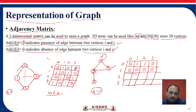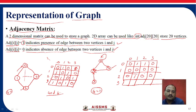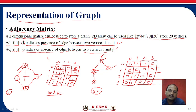Now for row 2: 2 to 0 — no; 2 to 1 — yes, there is an edge because a direction arrow is present; 2 to 2 — no self loop, so 0; 2 to 3 — no. For row 3: 3 to 0 — no connection; 3 to 1 — yes; 3 to 2 — no; 3 to 3 — no. So this is the matrix representation of the directed graph.